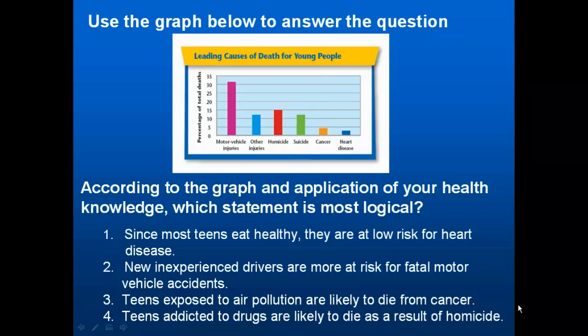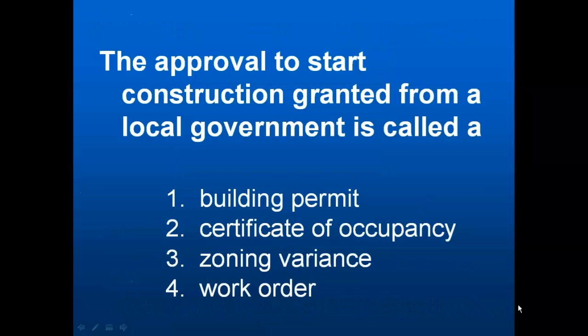Option four is the correct answer. So what does a student have to be able to do in order to answer this question? 'The approval to start construction granted from a local government is called?' This simply asks students to remember that a building permit is the local government's approval needed to start construction. The level? Remembering.